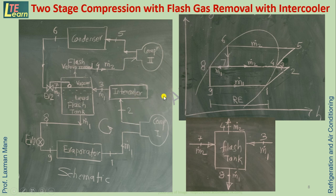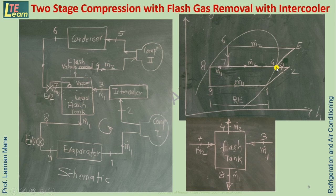Looking at the schematic and PH diagram: there are two compressors for the two-stage system. First compression is from point 1 to 2, and second compression is from point 4 to 5. The exit of compressor 1 at enthalpy h2 is cooled to enthalpy h4 via the intercooler (points 2 to 3 to 4), reducing superheat and temperature before the second compression. Then 4 to 5 is the second compression, and 5 to 6 is condensation in the condenser.